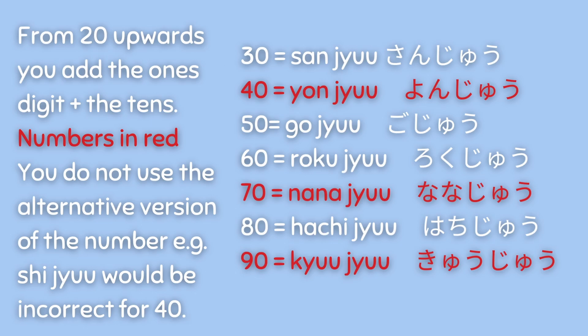The numbers that have two versions use the first form. For number four it is 四, for seven it is 七, and for nine it is 九. This applies for both when you use it in the digits column and the tens.